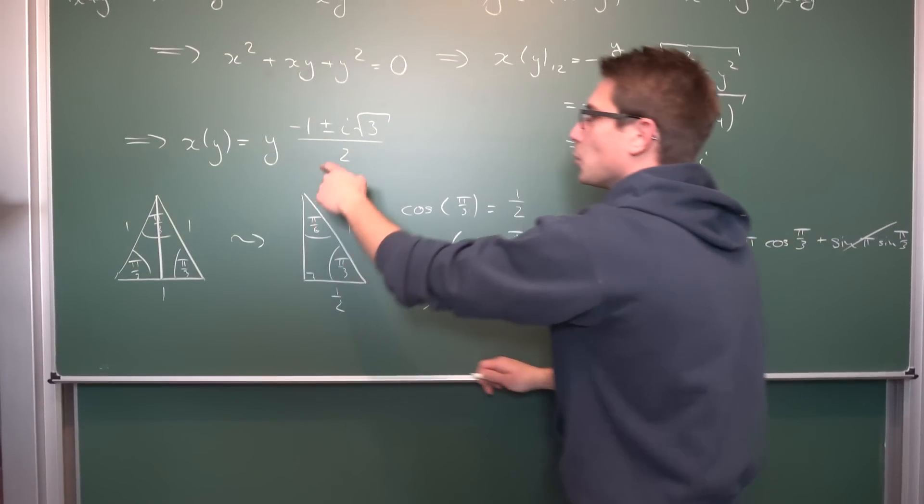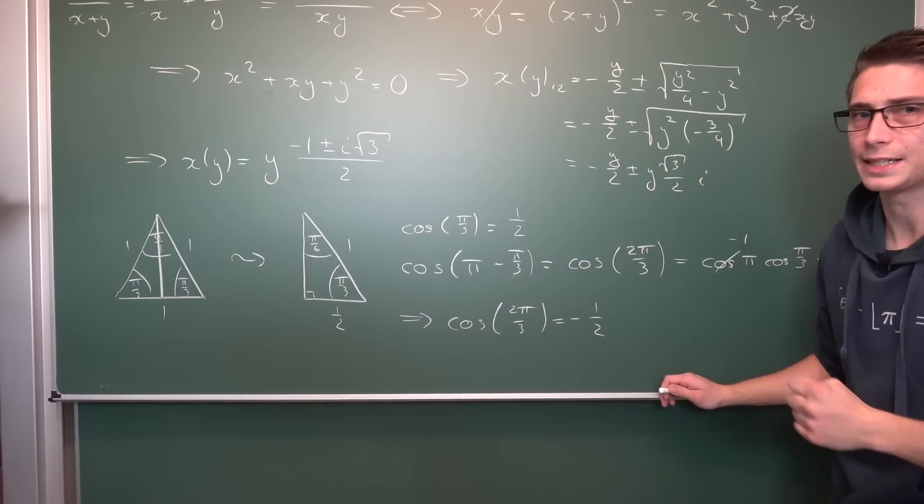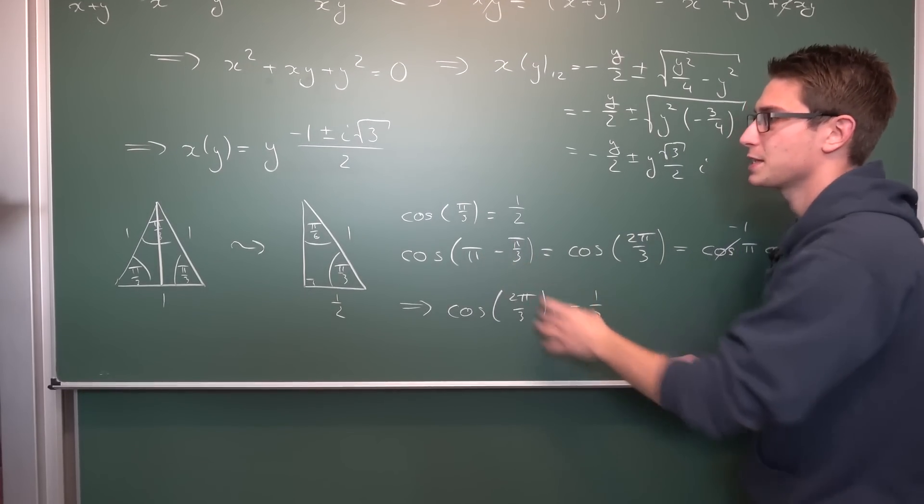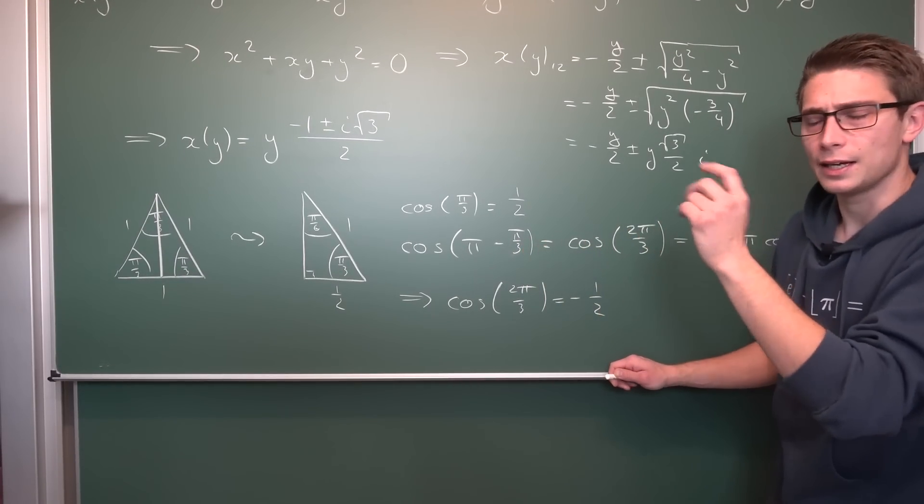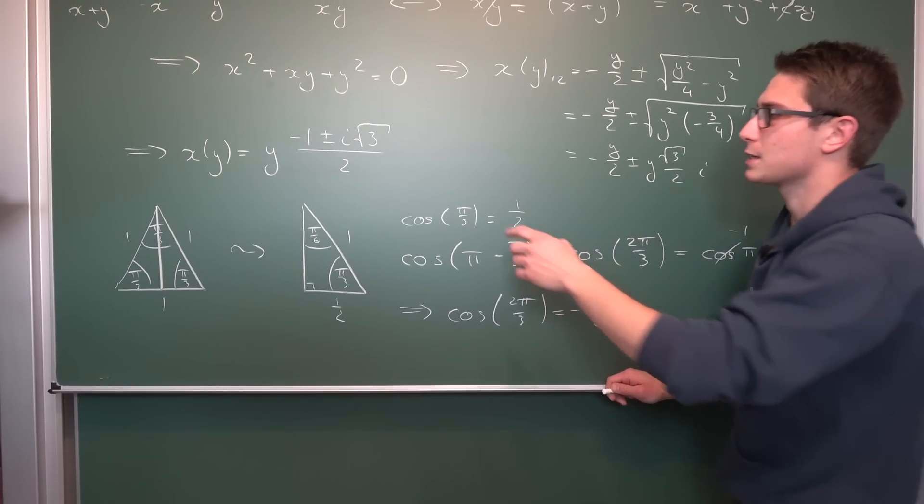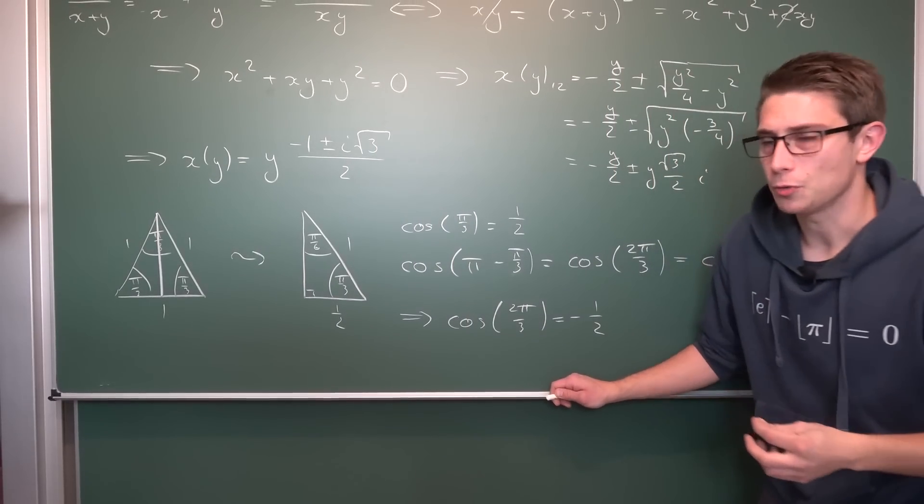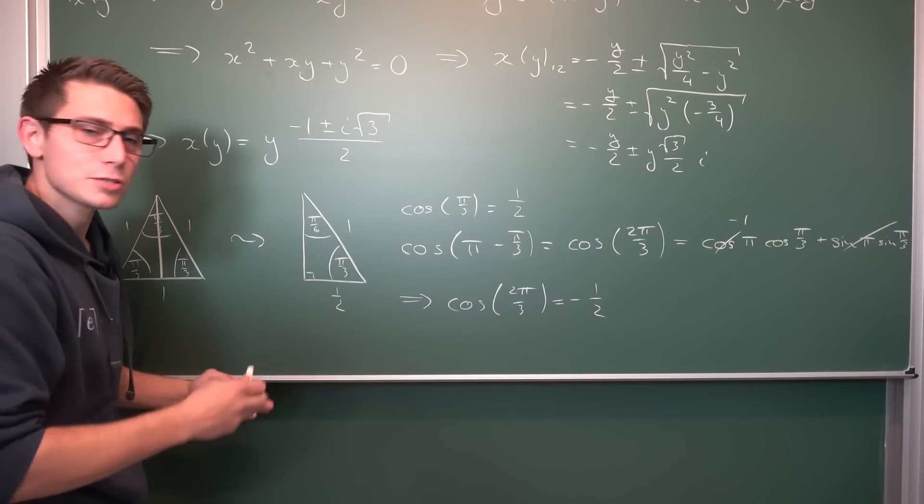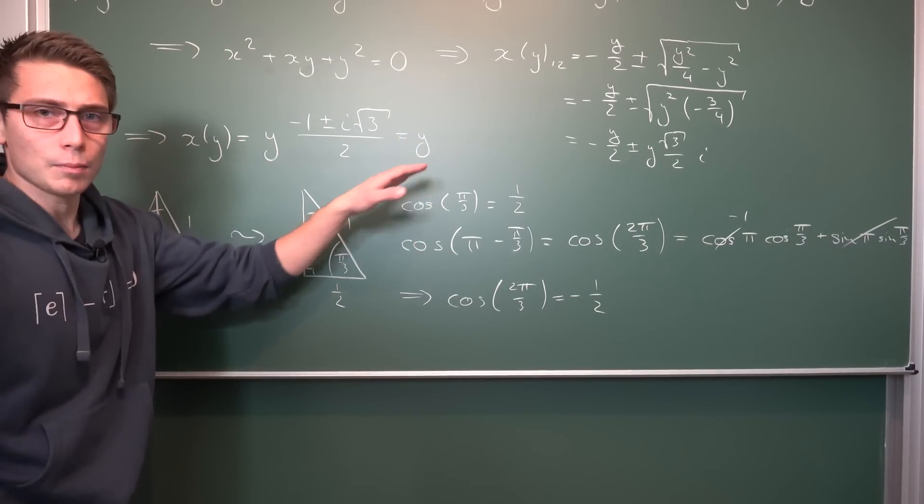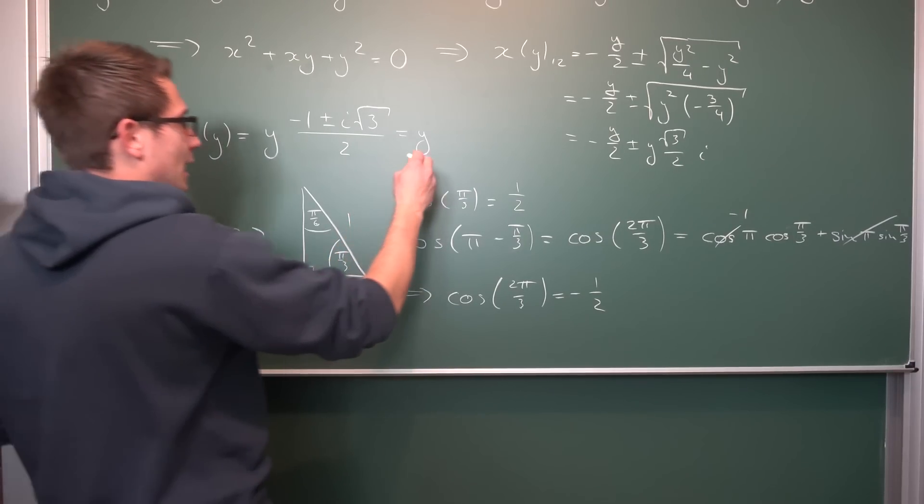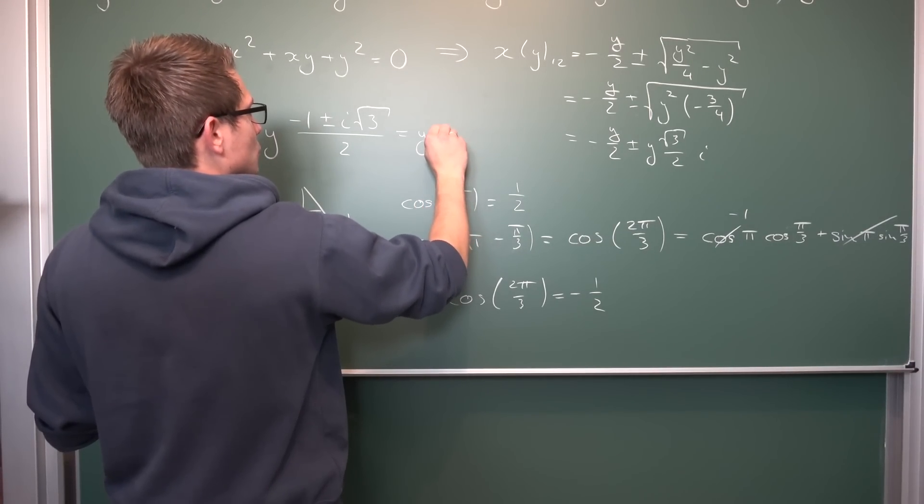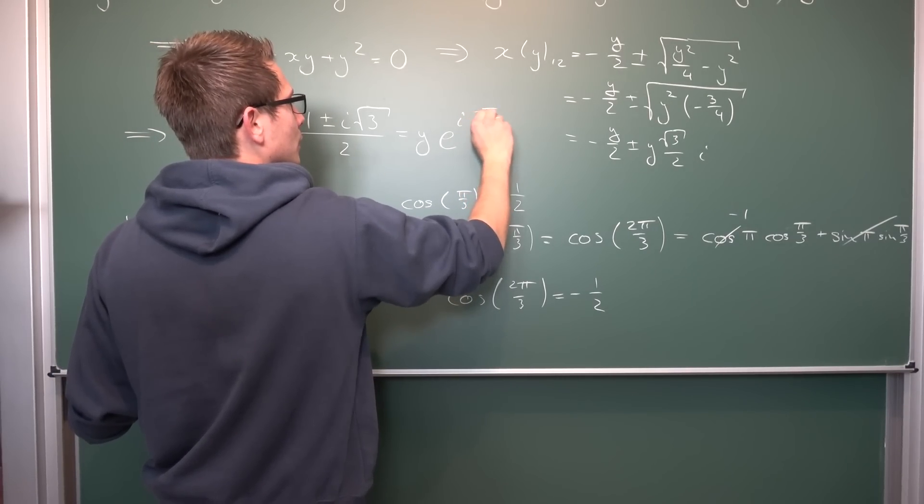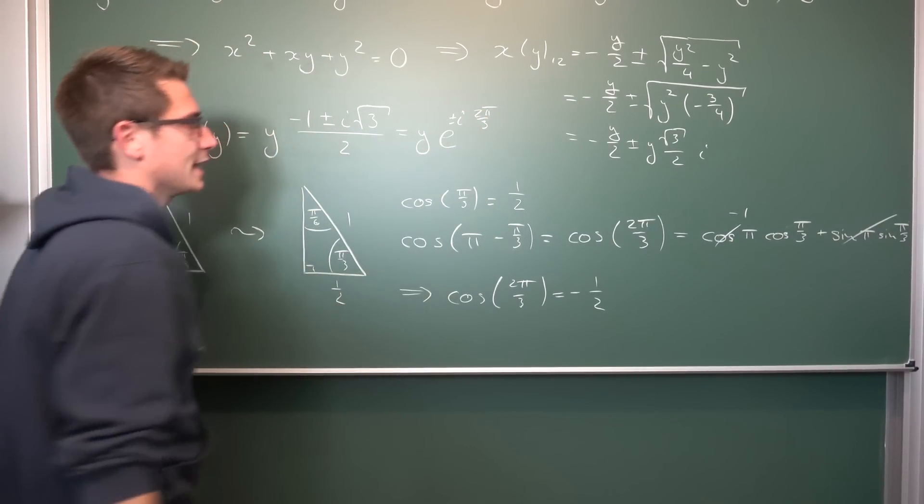Okay, this gets rid of the problem with the negative 1 half part that we got right here, and you can go through the same analysis with the addition theorem for the sine to get to yourself that the cosine, that the sine of 2 pi over 3 is going to result in the square root of 3 over 2. And since we have the positive and negative branches here, we can also conclude that x with respect to y can be expressed as y, being the magnitude for example, times, and now in our case we are going to get e to the i 2 pi over 3, but with a positive and negative sign in front, to account for the different branches that we have on our square root.